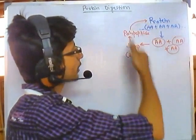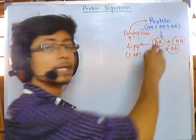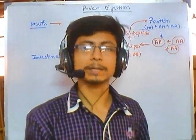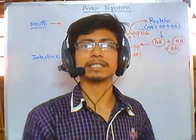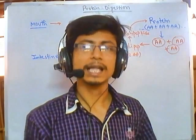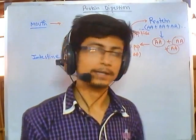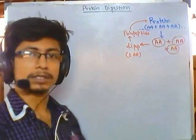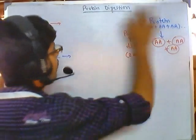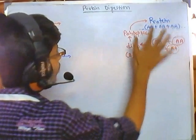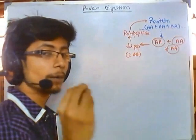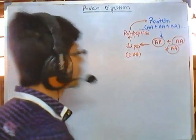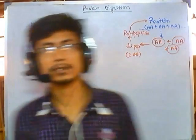When proteins are broken down into smaller fragments at the amino acid level, we can absorb those amino acids easily through intestinal epithelial cells and then process and use them in metabolism and other purposes. This is the basic overview of what we mean by protein digestion.